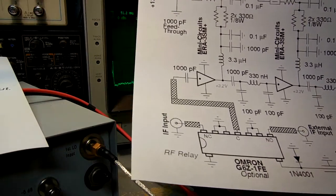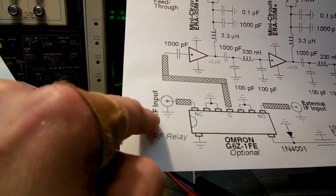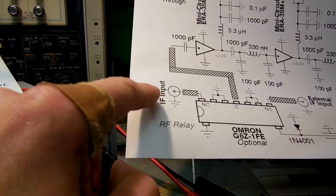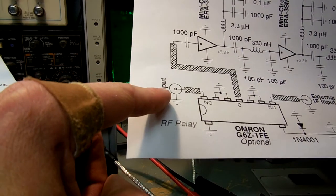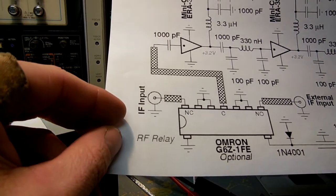Here's the schematic. On my version, I have the IF input from the second mixer right here. It'll be 10.7, but this module can be adapted to other IF frequencies.